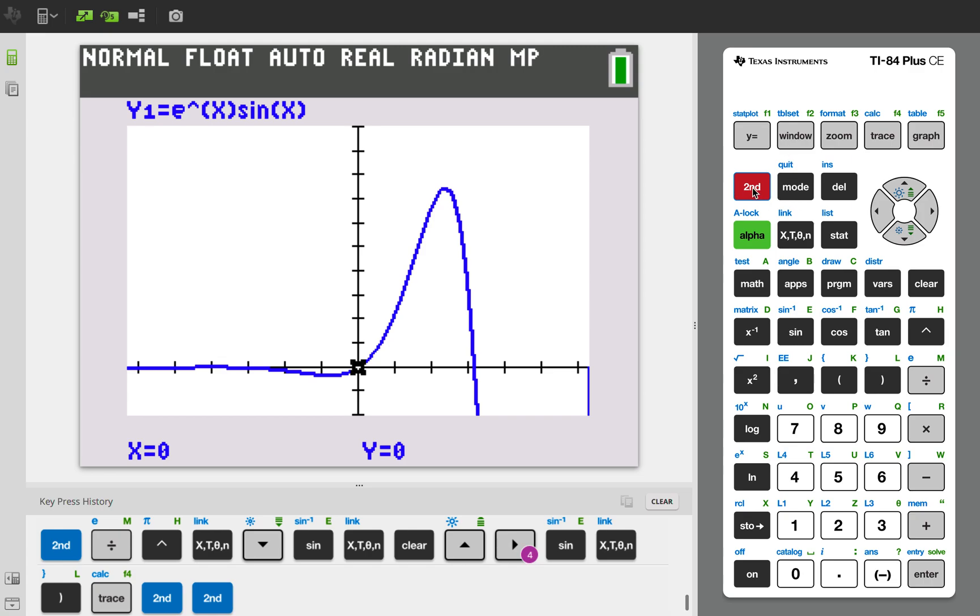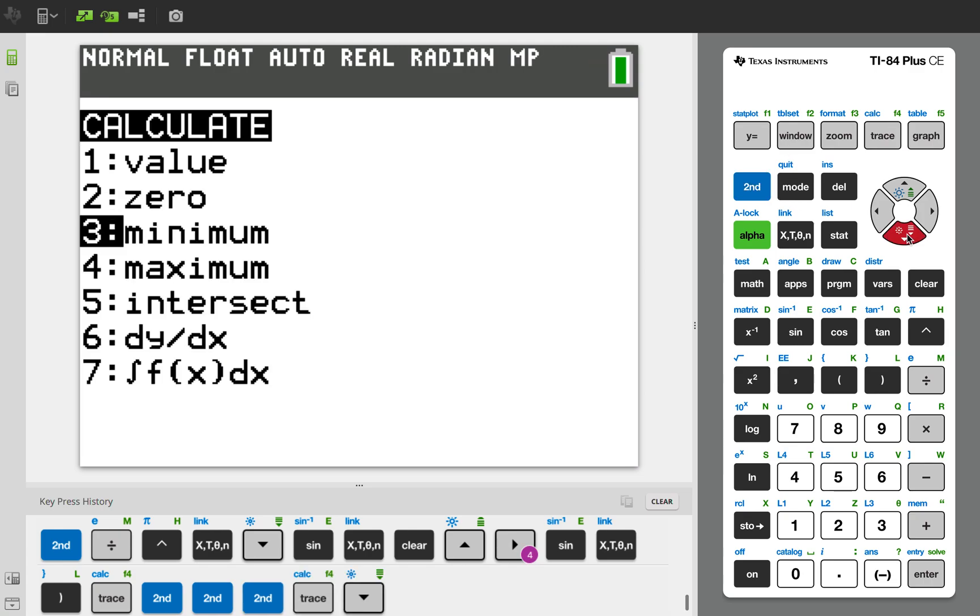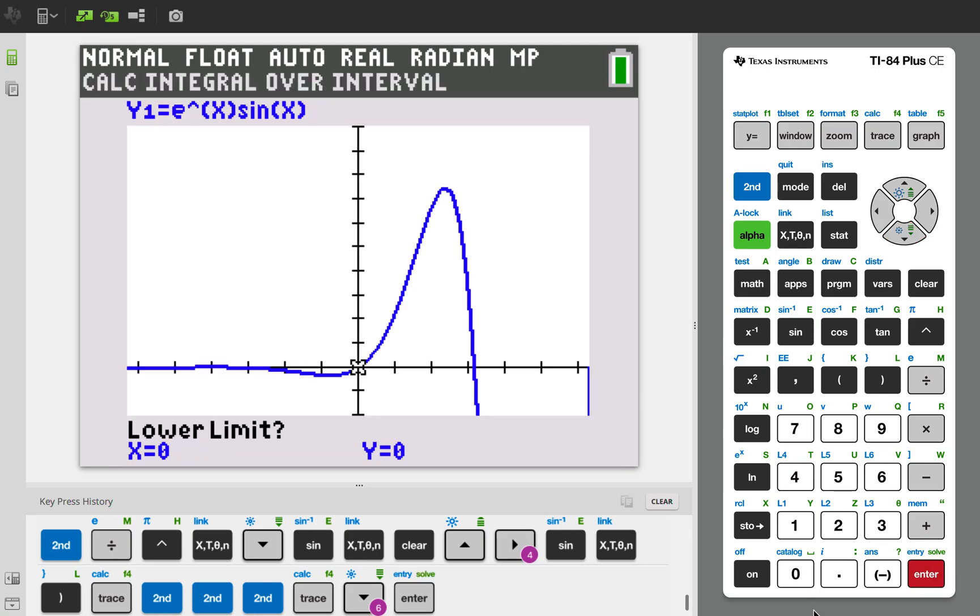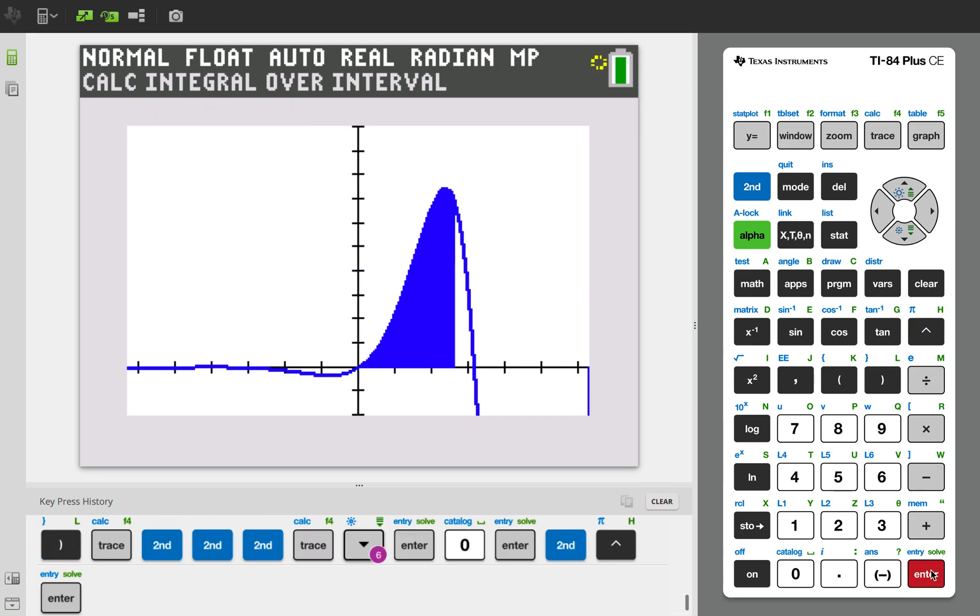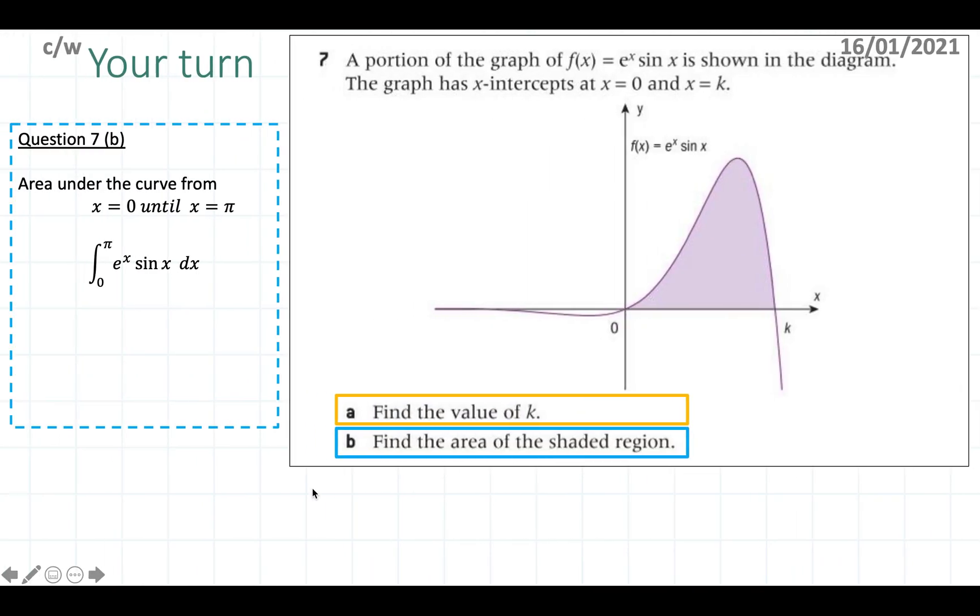This is your GDC. You're going to go to second calculate. You're going to do the integral which is here. You're going to start from 0 and you're going to go to π. Press enter and it changes the region for you and it's 12.07. So using the GDC is 12.07.